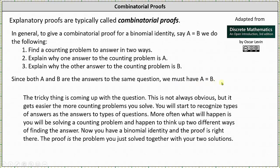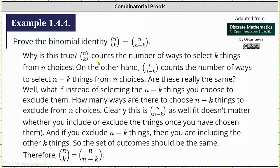Let's look at the first combinatorial proof. n choose k counts the number of ways to select k things from n choices. On the other hand, n choose n minus k counts the number of ways to select n minus k things from n choices. Are these really the same?